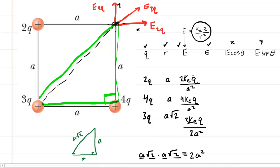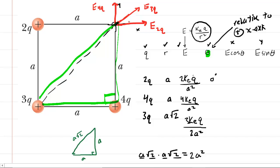The next column is the angle, and we need to measure angles relative to the positive x-axis. The electric field E2Q points directly to the right along the positive x-axis, so that angle is 0 degrees. E4Q points straight up, measured from the positive x-axis, so that angle is 90 degrees. E3Q goes off diagonally; in a square the diagonal cuts the 90-degree angle in half, so this angle is 45 degrees.